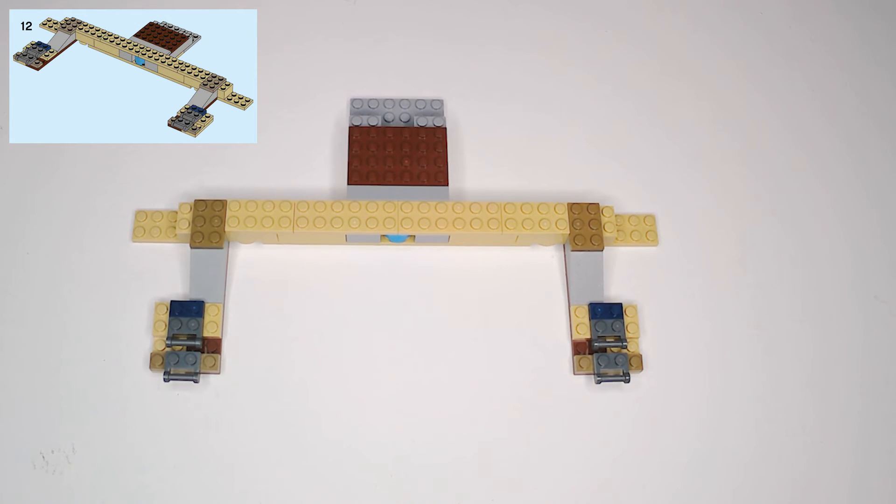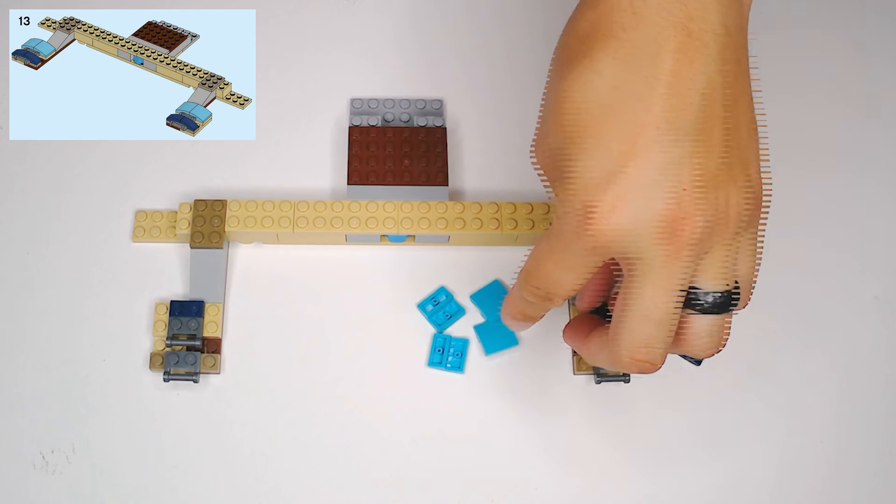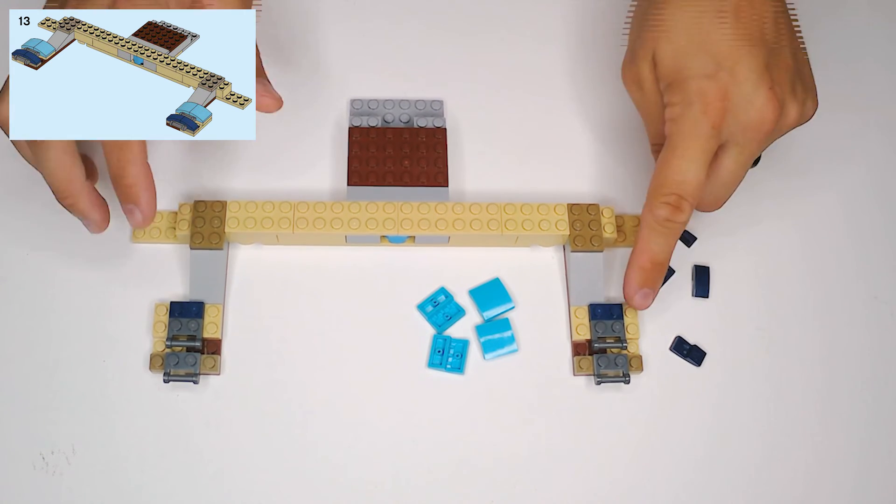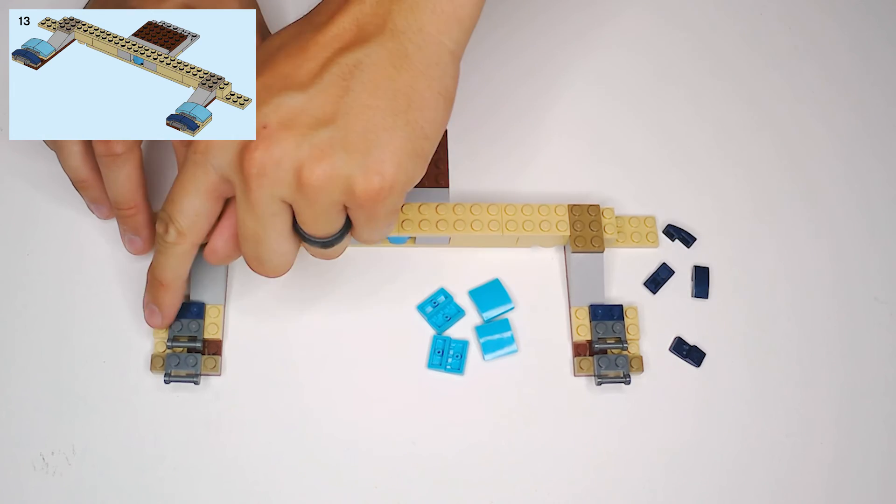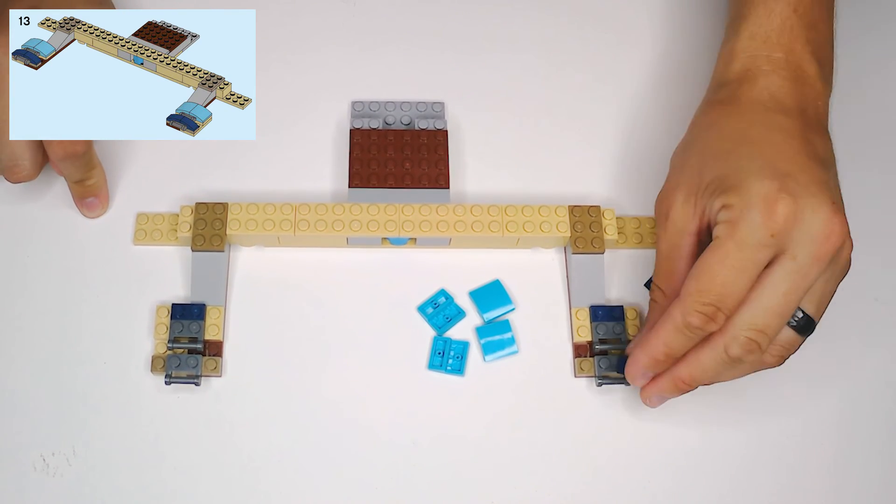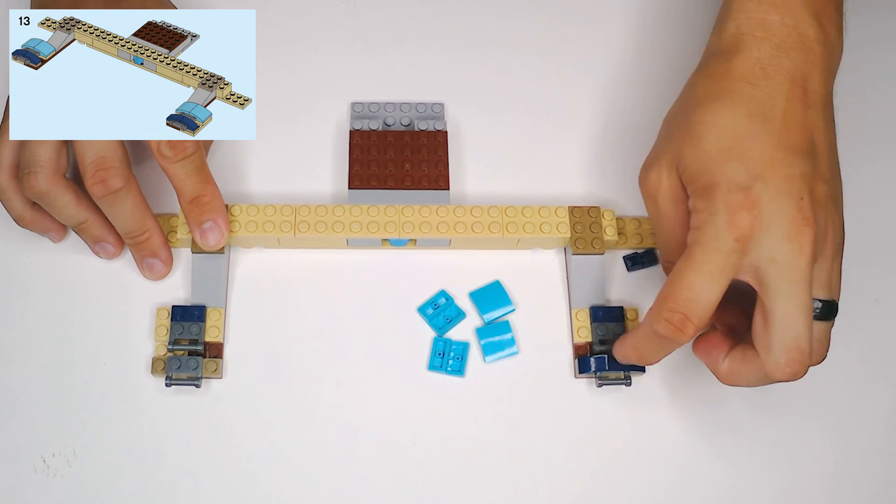Now, step 13, we're going to get some of these curved slope pieces. So we have four of the dark blue 1x2 variety, and we also have four of the teal 2x2 variety. And what we're going to do with those is we're going to make little arches to clip those bar handle pieces on. So the ones that are on top of the dark tan are going to get the dark blue.